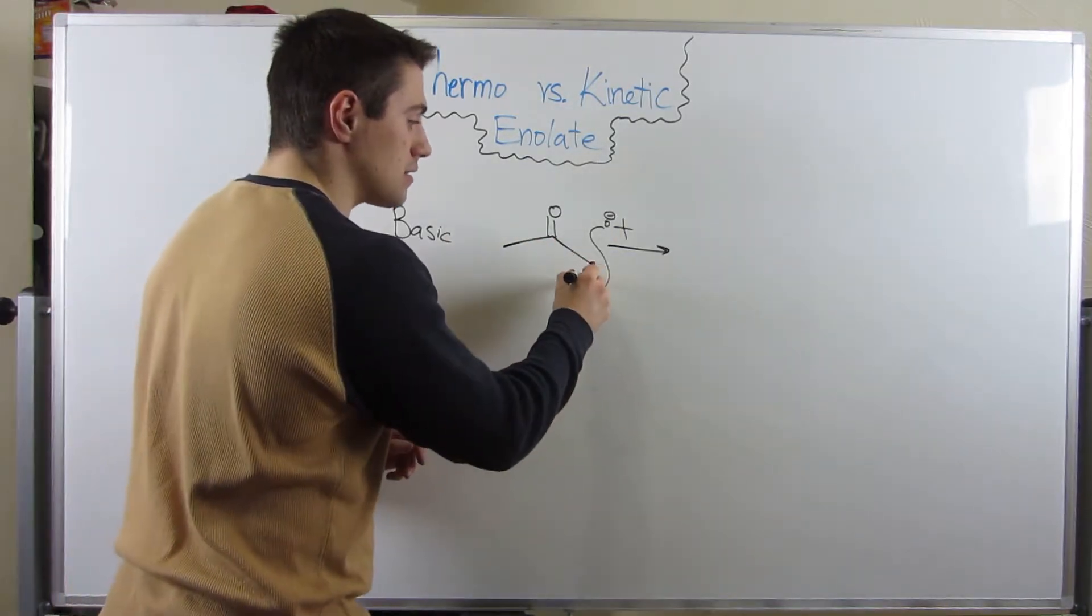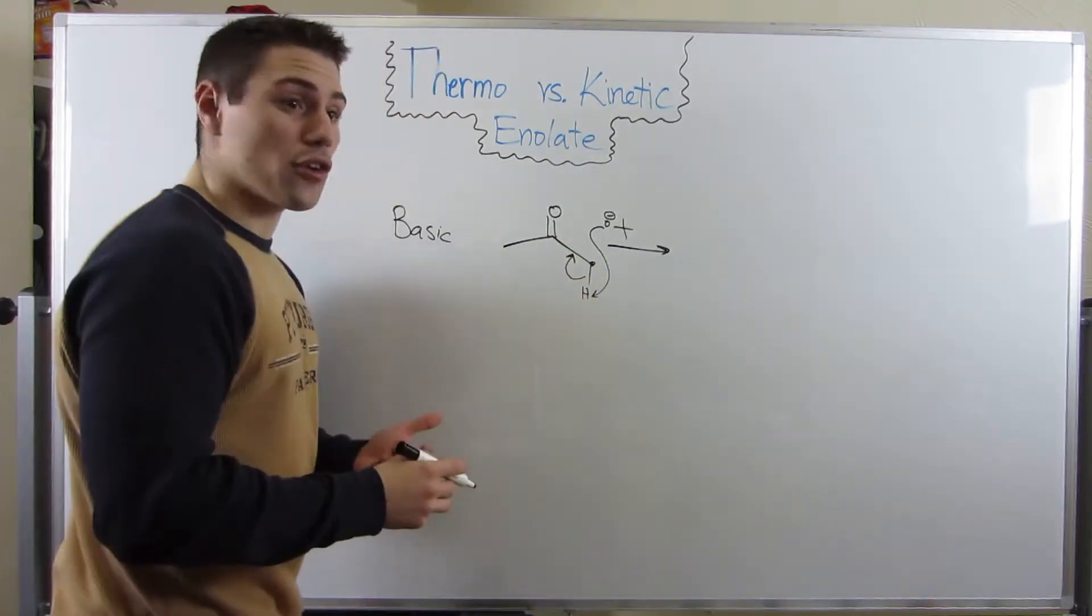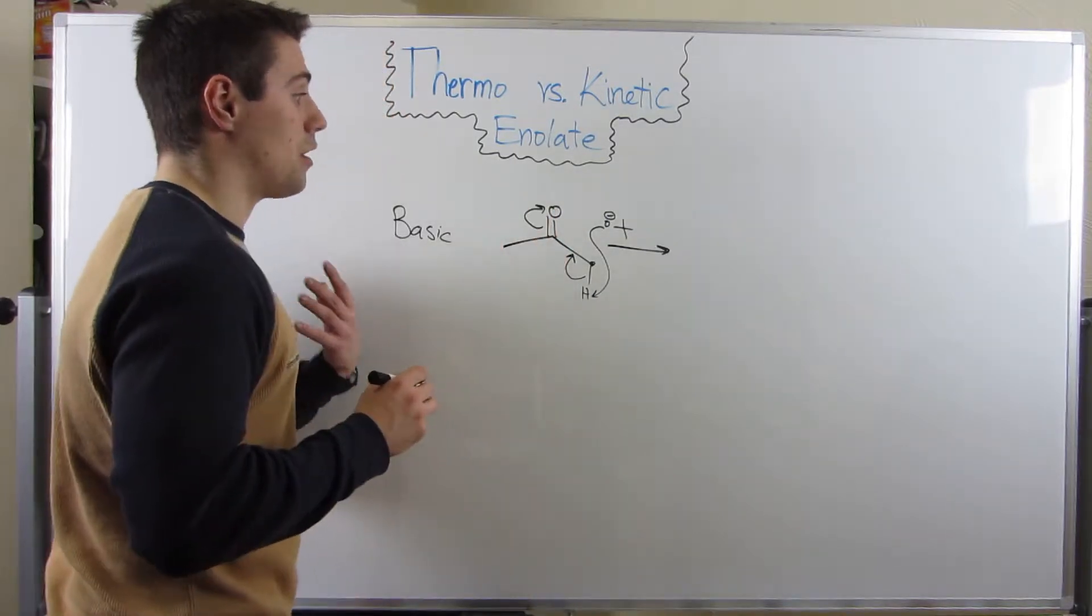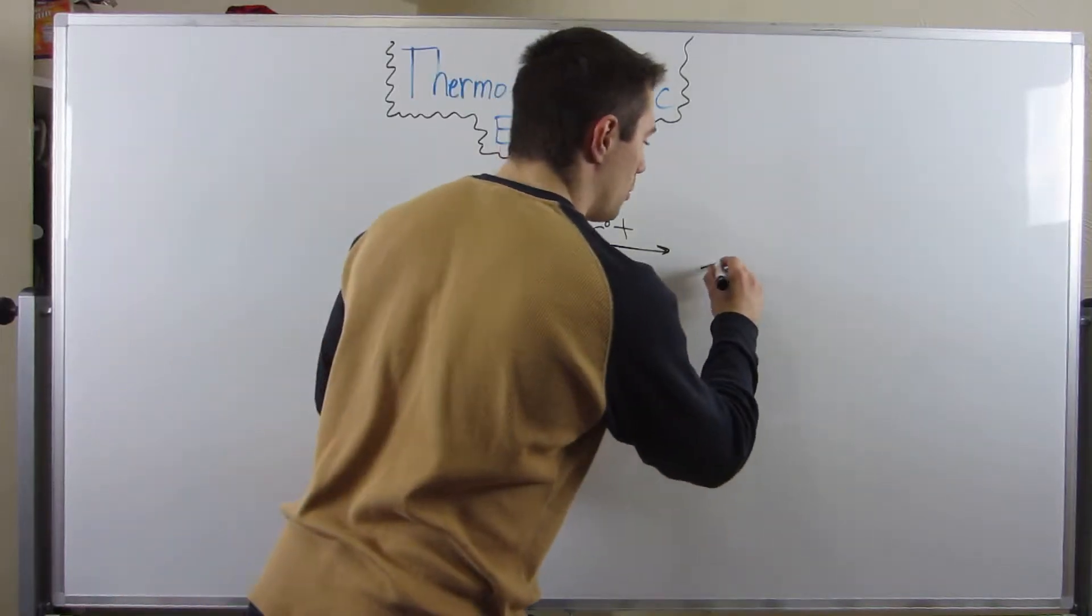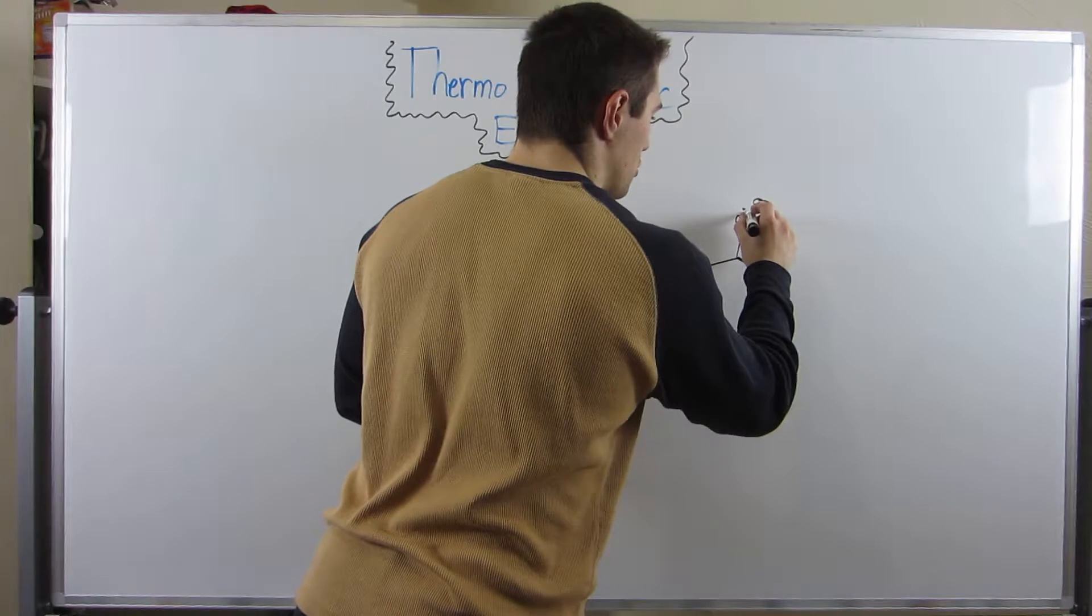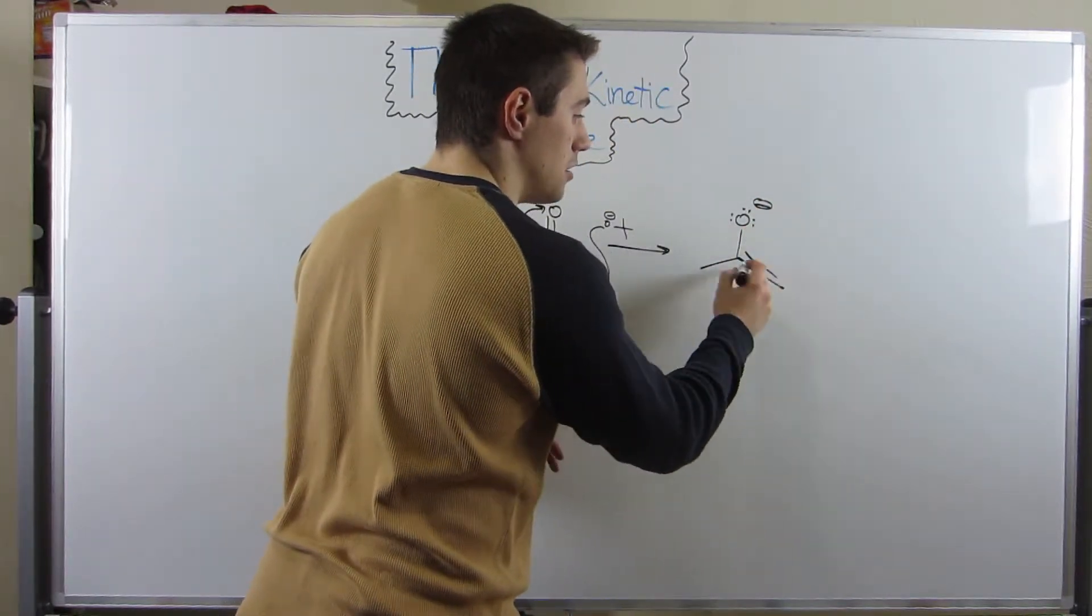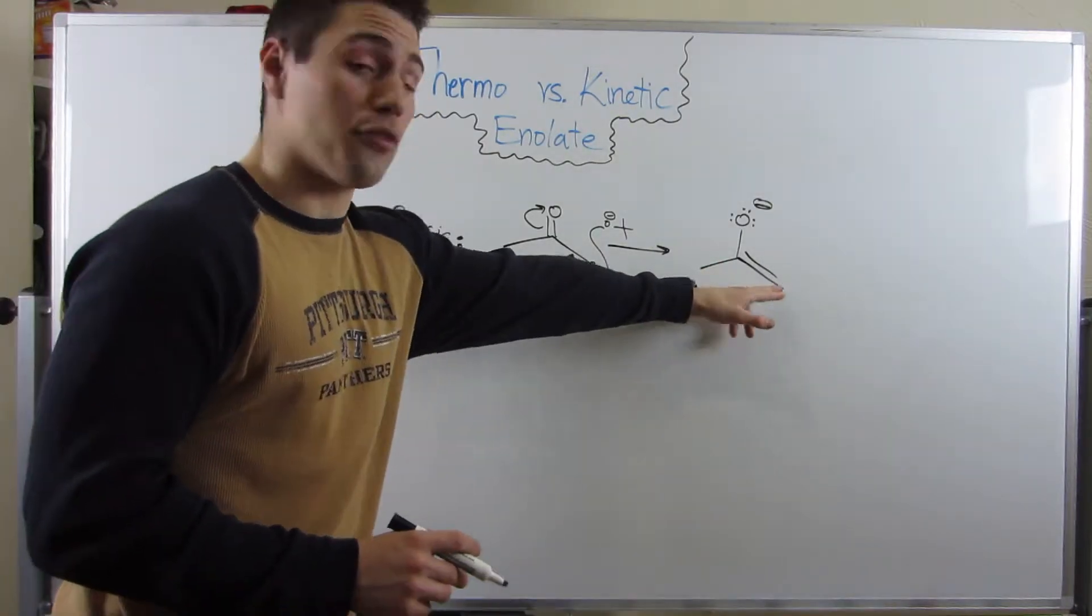You then take these electrons, swing them in between the carbonyl carbon and the alpha carbon to form a double bond, and kick up an electron pair to the carbonyl oxygen in a basic environment. This forms an enolate functional group with a negative charge on the oxygen and a double bond between the once carbonyl carbon and the alpha carbon.